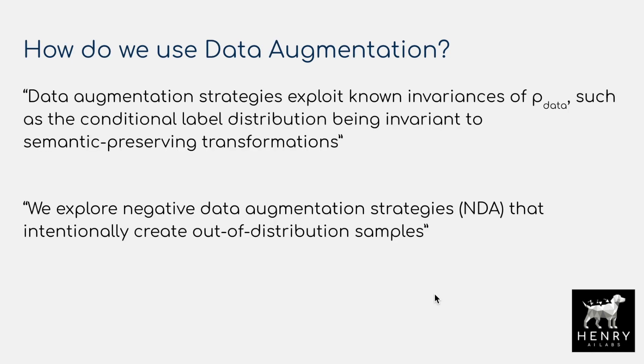Here are some key quotes from the paper. Data augmentation strategies exploit known invariances of the data distribution, such as the conditional label distribution being invariant to semantically preserving transformations. This describes how most data augmentation approaches only look for label-preserving transformations. Whereas, this paper explores negative data augmentation strategies — NDA — that intentionally create out-of-distribution samples, integrating them into the training loop to improve performance.